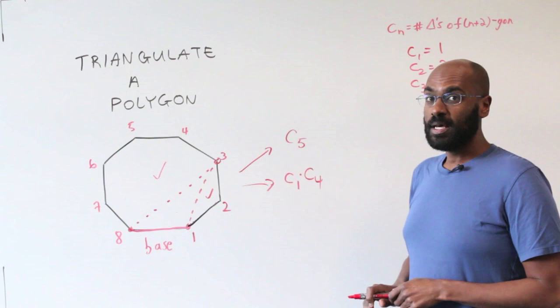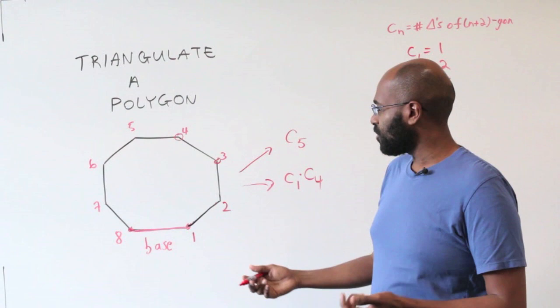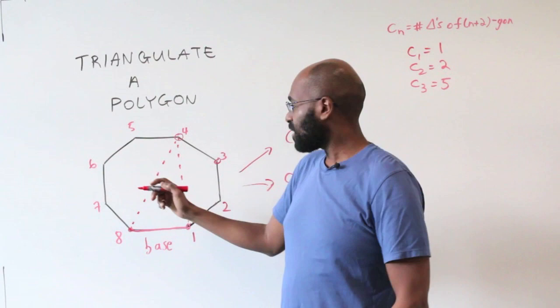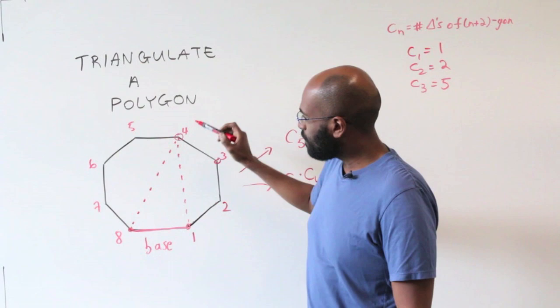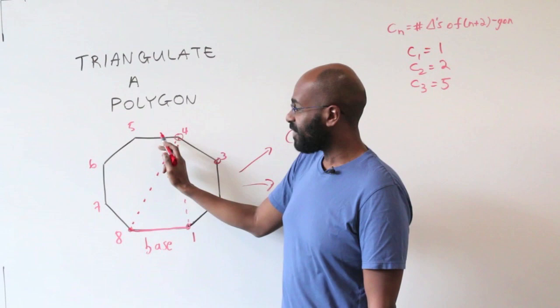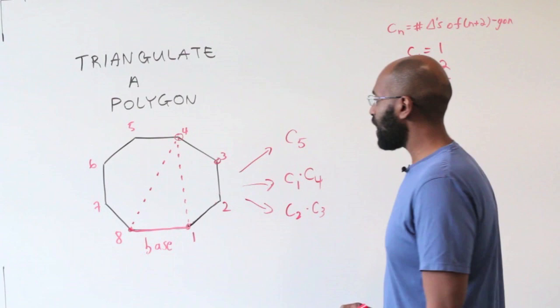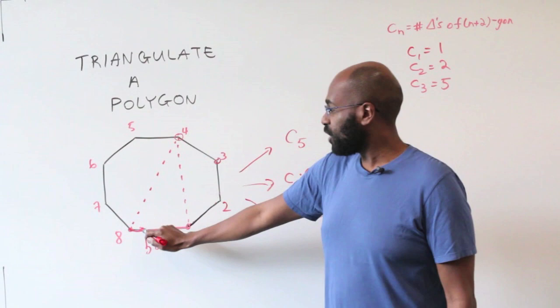Now here's where we start seeing something interesting. If the base triangle's third vertex is vertex 4, then we need to triangulate a 4-gon on one side and a 5-gon on the other. The number of ways to triangulate the 5-gon is C_3, and the number of ways to triangulate the 4-gon is C_2. Triangulating them independently, the total for this case is C_2 times C_3. We're starting to see a pattern — if we move this vertex along, the next case gives C_3 times C_2.